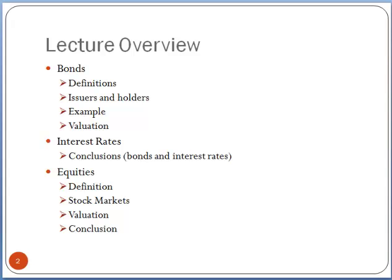The road map for what we'll be discussing is as follows. We'll start by looking at bonds — I'm going to provide some definitions, talk about issuers and holders, provide some examples, and then really focus on the valuation of bonds. Then I'll take a couple minutes and talk about interest rates, which are inextricably linked to bonds. Finally, we'll spend a little bit of time on equities by defining them, talking about the stock markets, valuing equities, and some conclusions on equities.